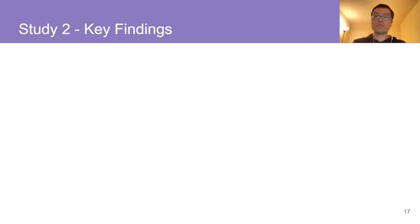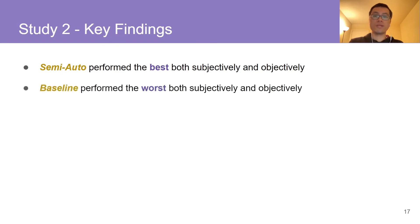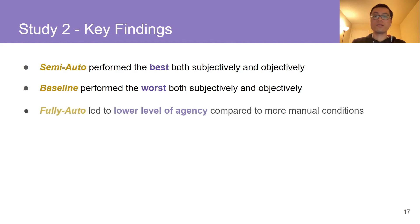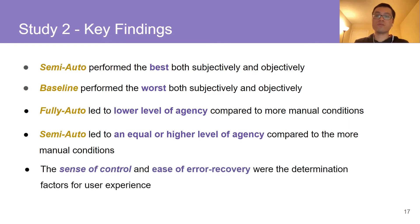Here is a summary of the key findings from our second study. Semi-Auto performed the best both subjectively and objectively. The baseline performed the worst both subjectively and objectively. Fully-Auto led to a lower level of agency compared to the more manual conditions. Semi-Auto led to an equal or higher level of agency compared to the more manual conditions. And the sense of control and ease of error recovery were the determining factors for user experience.